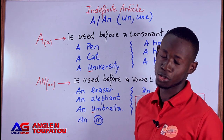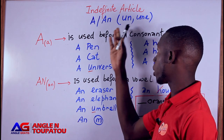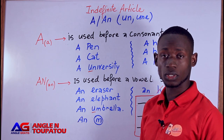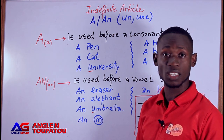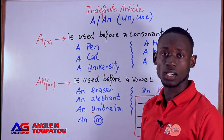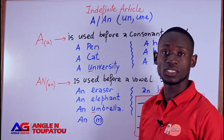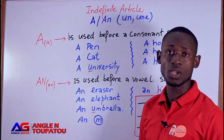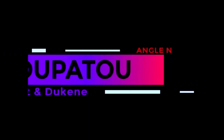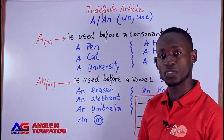Hello everybody, bonsoir à tout le monde, bonjour, comment est-ce que vous êtes en forme? I'm going to talk a little about — the indefinite article. Yesterday we talked about the definite article, the sound, how you can pronounce 'th' — 'the' and 'the'. But now we are going to teach you how you can pronounce the indefinite article. And after, we will explain in the next video how we can use indefinite and zero article. Without further ado, let's get into the video.